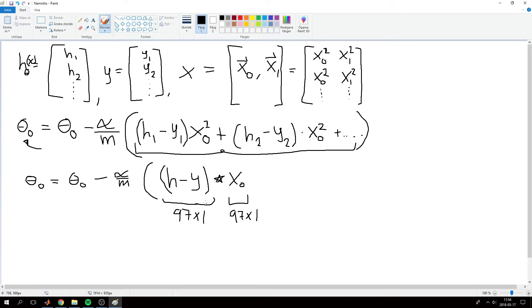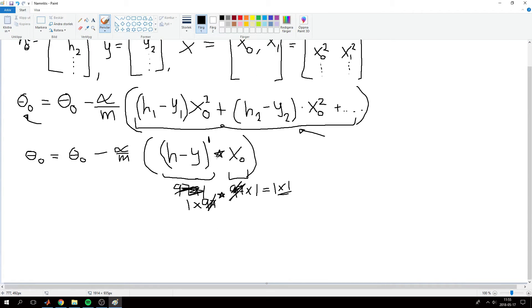What we have to do in this case, since we want this to be just a number, similarly to how this sum will be just a number, is take h minus y transpose. What that will give is a 1 by 97. When we multiply these two, they will cancel, and all that's left is a 1 by 1, just a number.